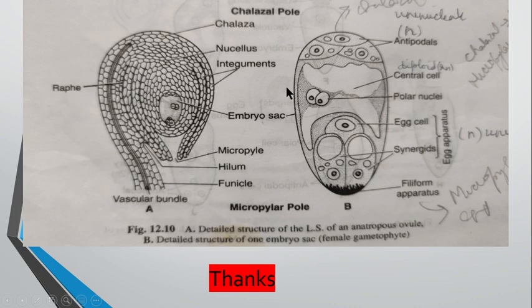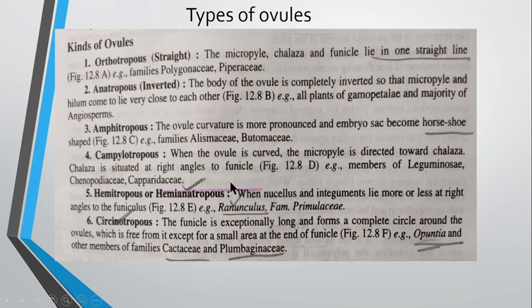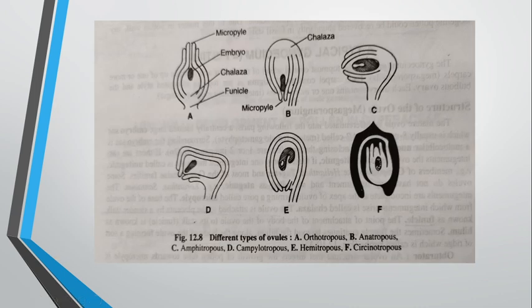There are three terms to remember regarding the orientation of the ovule. This diagram shows the structure of an embryo sac — as mentioned, when the ovule matures it gets converted into the embryo sac. Now, the first type of ovule is known as the orthotropous type, sometimes also called the straight type. Here the micropilar end, the chalazal end, and the funicle all lie in a straight line.